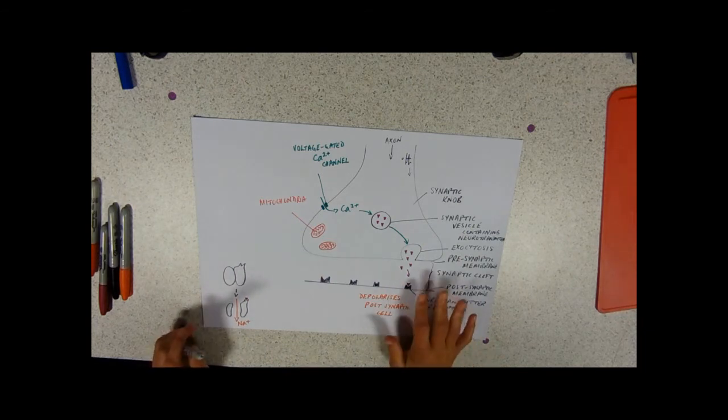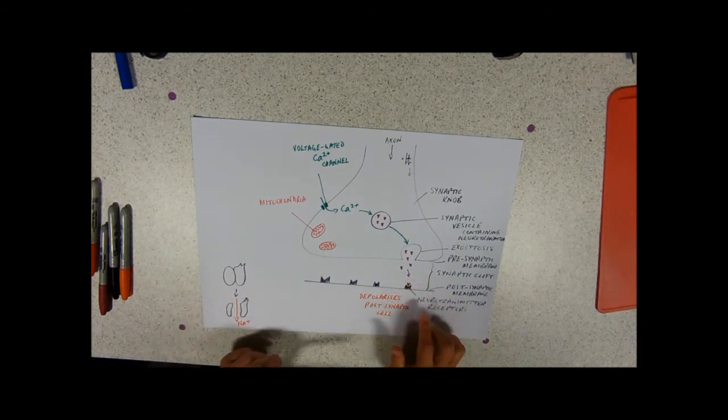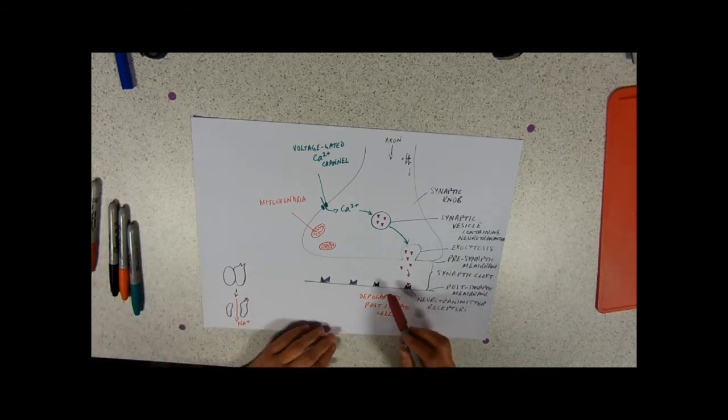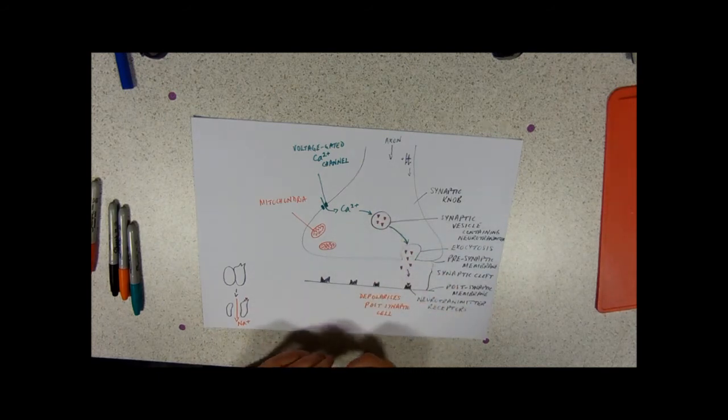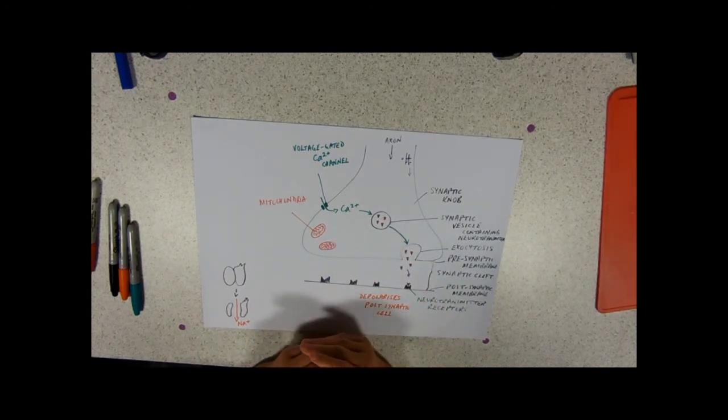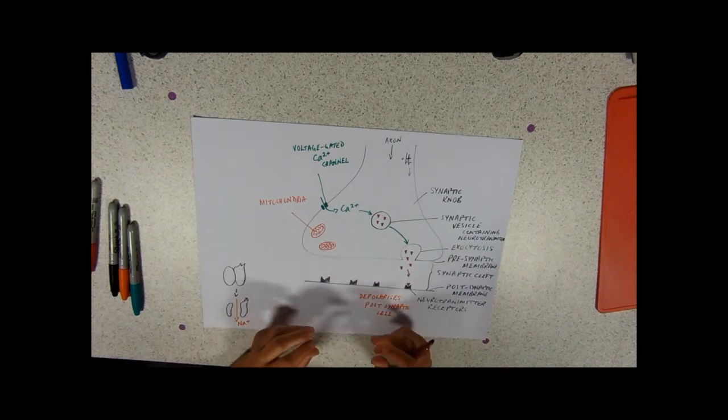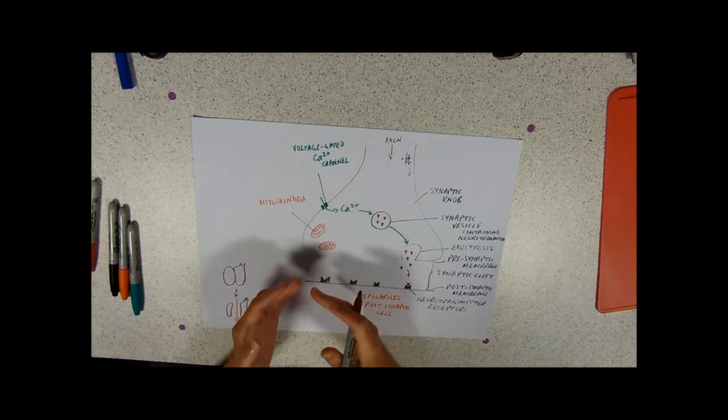You can't leave these neurotransmitters indefinitely on the receptors. So, in some way, they've got to be taken up and then they've got to be repackaged into vesicles. So, there are a couple of scenarios. Some are directly taken up in channels and the mitochondria provide the energy to repackage them into vesicles.